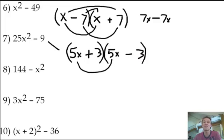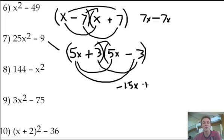So, again, there's your 25x squared. There's your negative 9. Notice, because you've got 1 plus and 1 minus, you're always going to have a minus number at the end, or minus term at the end. So, that's negative 9. And here we go. Outer, negative 15x. Inner, positive 15x.